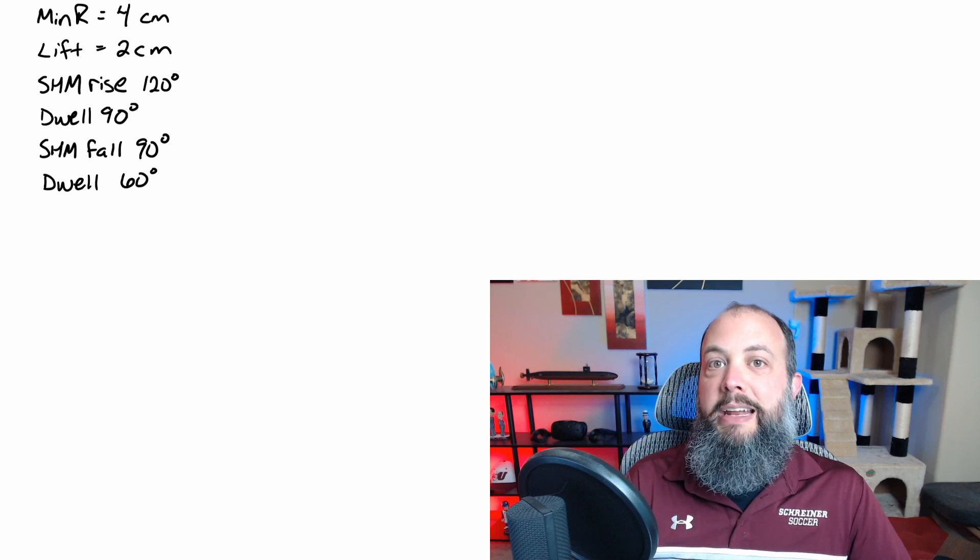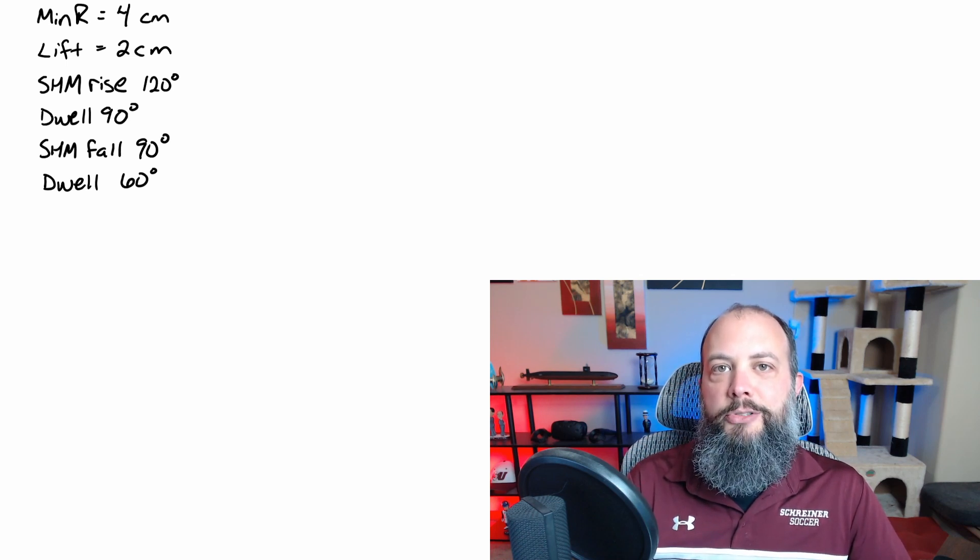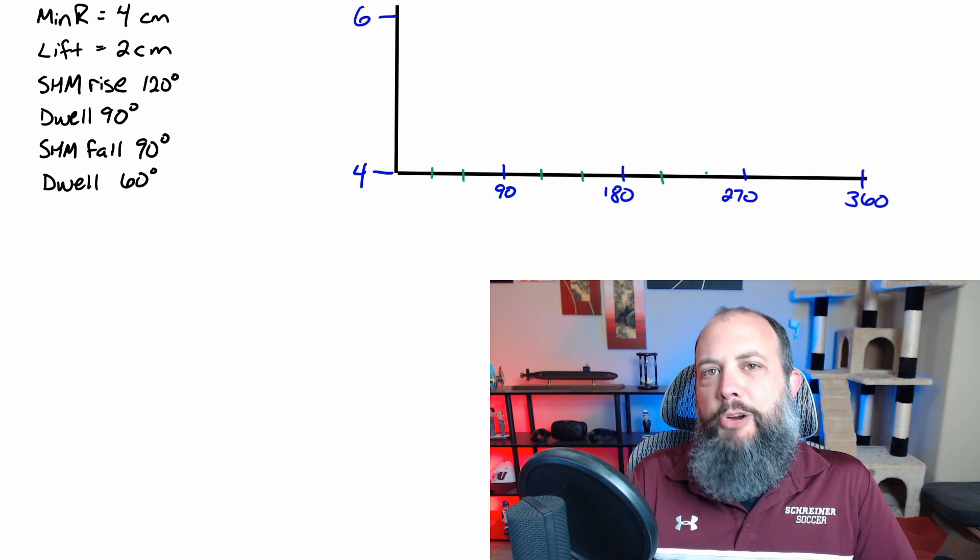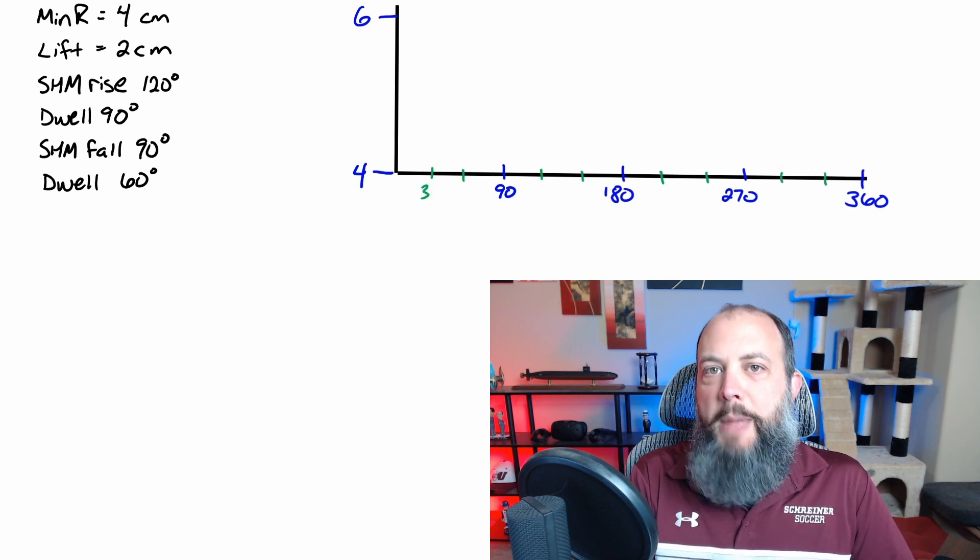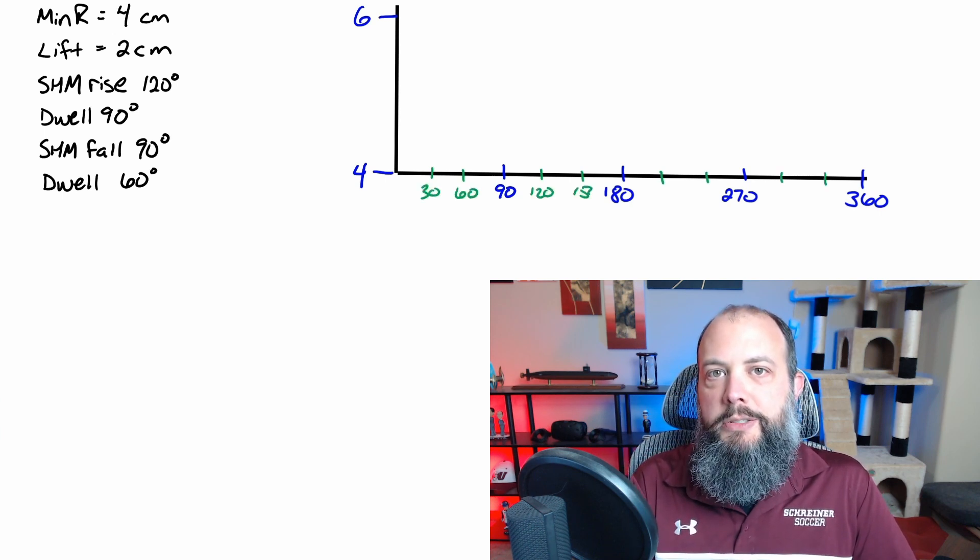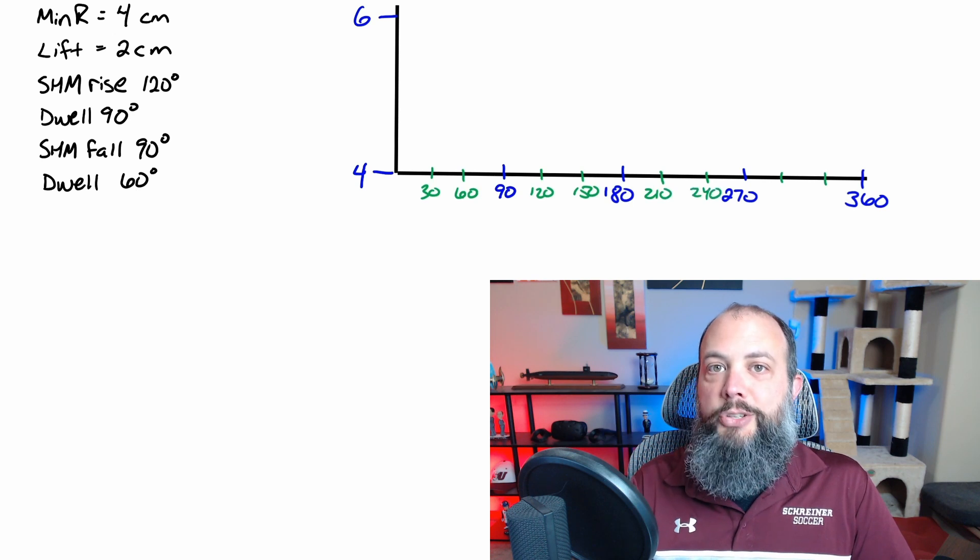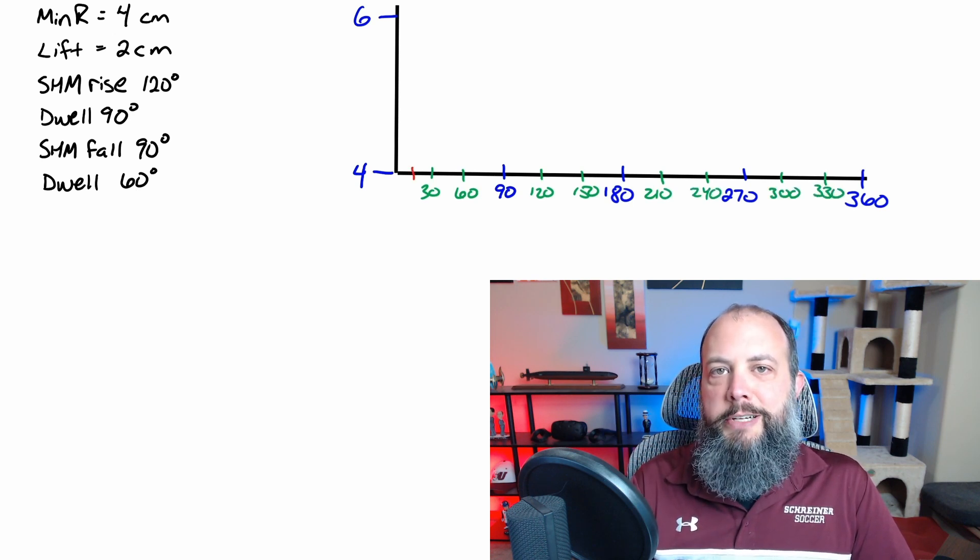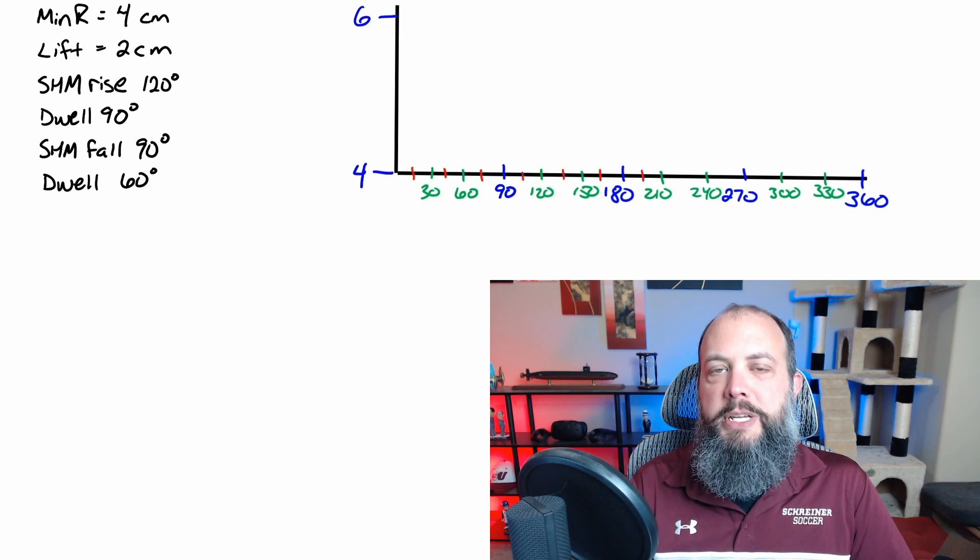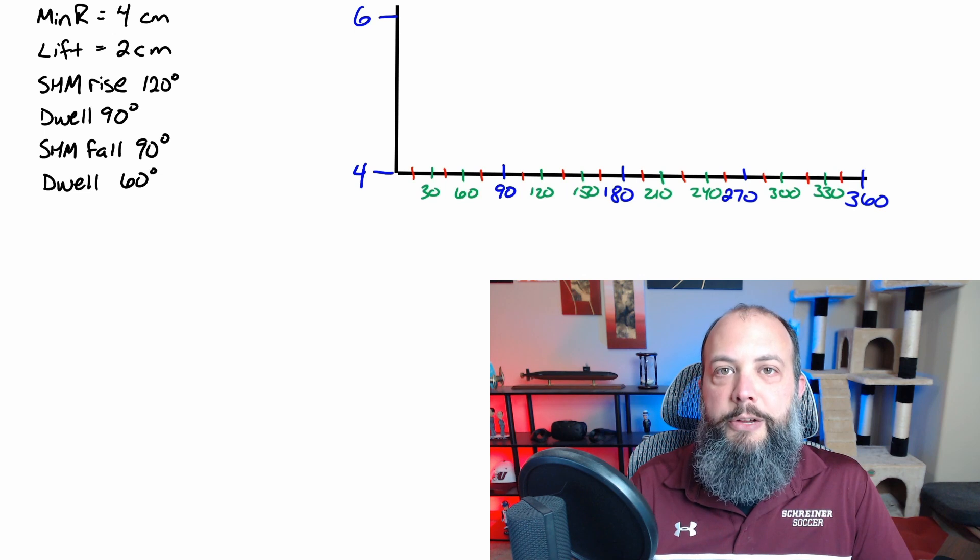So we want the follower to actually maintain a constant height at those levels. To start off the displacement diagram, label your minimum height, maximum height on the y-axis, and then go ahead and place your angle markings on the horizontal axis, where I've color coded to help show it's a little clearer. I'm using 15 degree increments because the polar graph paper that I'm going to be using is labeled with a 15 degree increment.